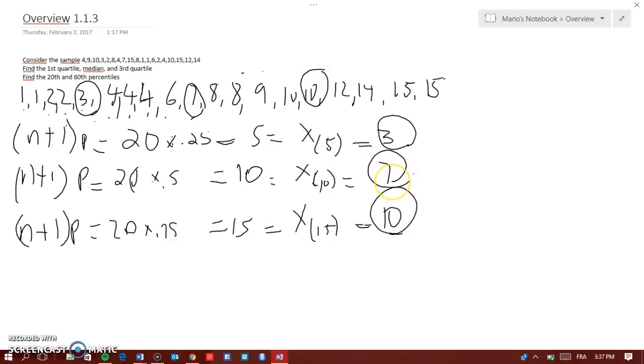So, this is how you calculate the percentile of a sample. Now, this is how you find the 20th percentile and the 60th percentile. So, this is the same thing again, n plus 1, p, so 20 times 0.2 and 20 times 0.6.